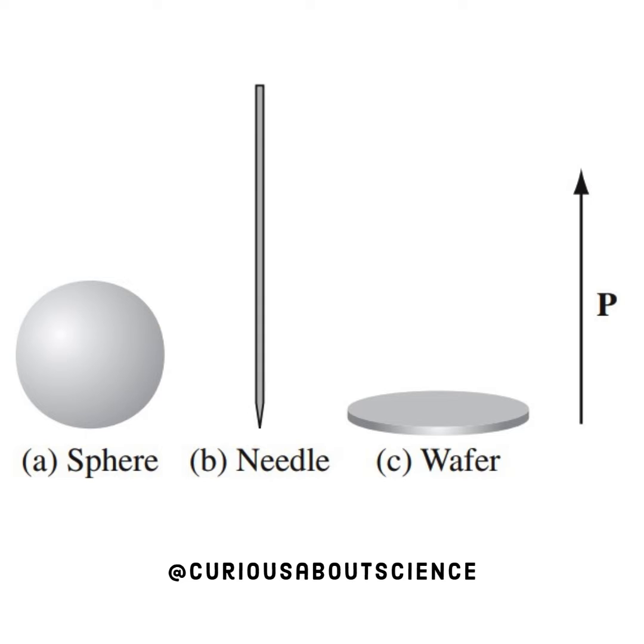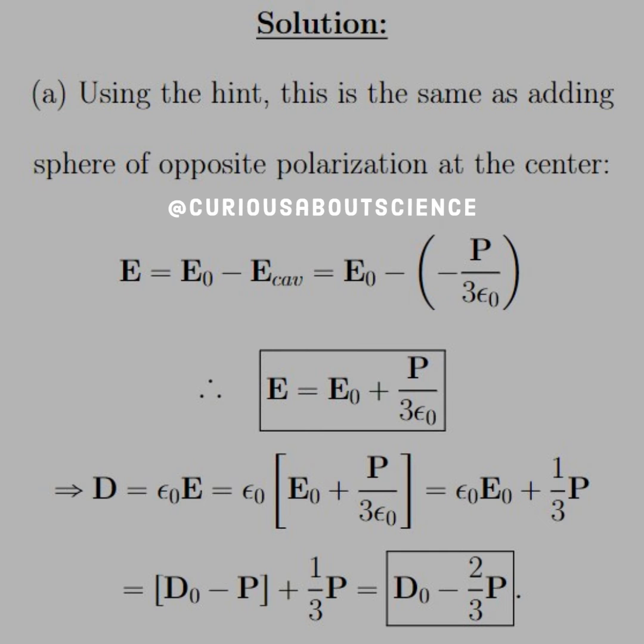A quick look at the shapes involved. We have a sphere, a needle, and a wafer with the polarization pointing vertical. Alright, so for our solution, we'll use the hint.